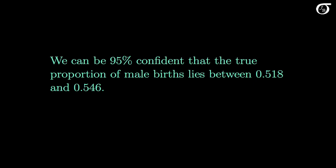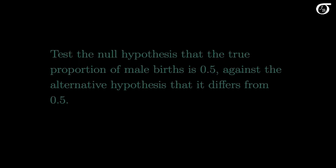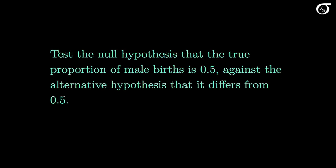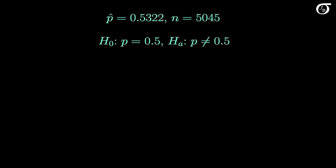If this is our point of interest, we can carry out a more formal hypothesis test. Let's test the null hypothesis that the true proportion of male births is 0.5, against the two-sided alternative hypothesis that it differs from 0.5. We may not have had any preconceived notion about whether the proportion is greater or less than 0.5, and a two-sided alternative hypothesis is appropriate here. Here we want to test the null hypothesis that the parameter P is equal to 0.5, against the alternative hypothesis that it differs from 0.5.